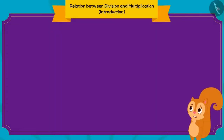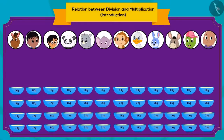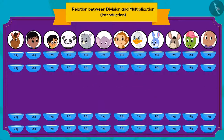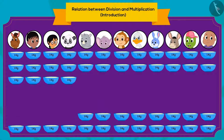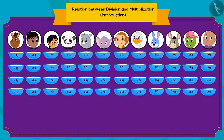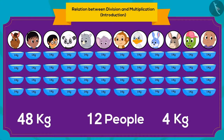Chanda needed to divide that kheer among 12 people in the village. Can you tell how much kheer each villager would get? Chanda first gave 2 kg of kheer to each individual, then 1 kg more, and finally 1 more kg. This way, Chanda divided 48 kg of kheer equally among 12 people, and each person received 4 kg of kheer.